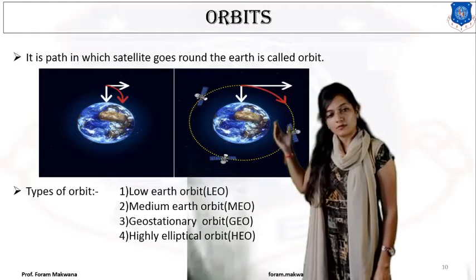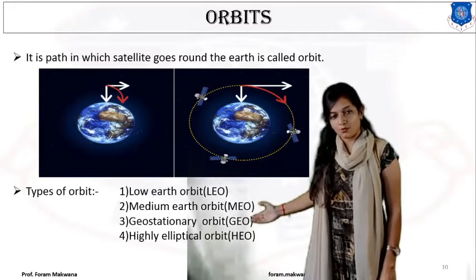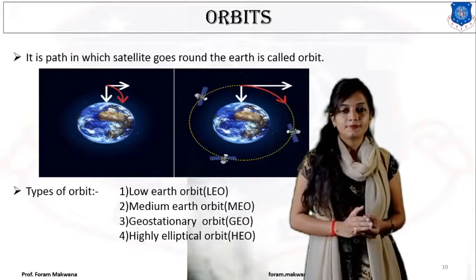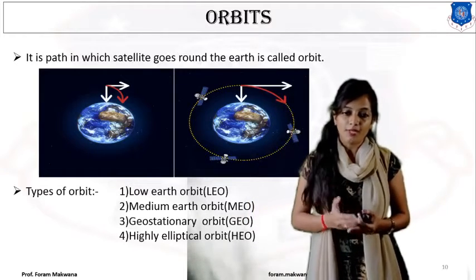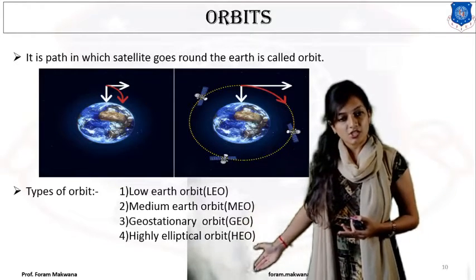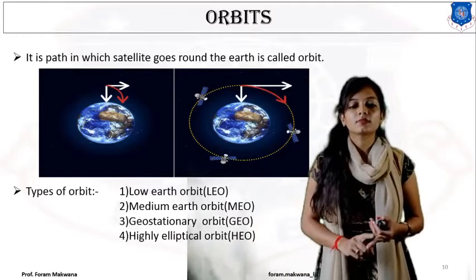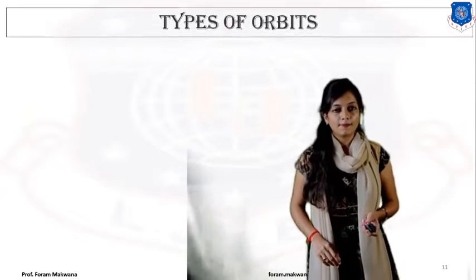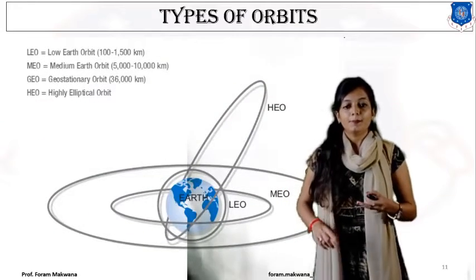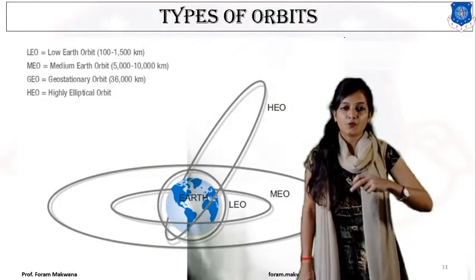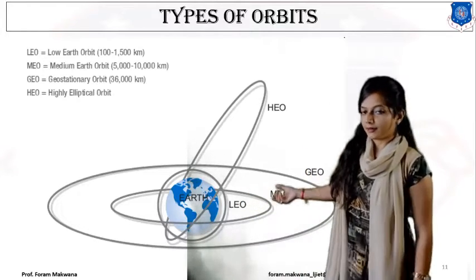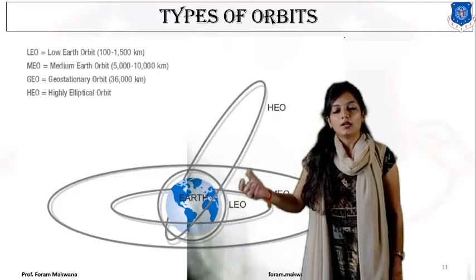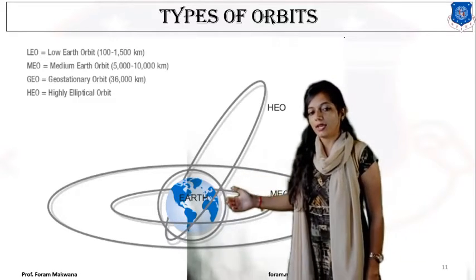The classifications are LEO, MEO, GEO, and HEO. LEO stands for Low Earth Orbit. MEO stands for Medium Earth Orbit. GEO stands for Geostationary Orbit. And the fourth one is Highly Elliptical Orbit. You can see that LEO is nearest to the surface of the Earth — the distance from the Earth to LEO is the lowest, which is why it is called Low Earth Orbit.